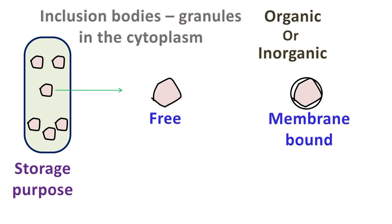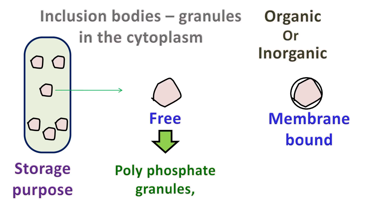The inclusion bodies can either be free or bound by a membrane. Examples of free inclusion bodies include polyphosphate granules and granules of glycogen. Polyphosphate granules act as a reserve source of phosphate for the cells.